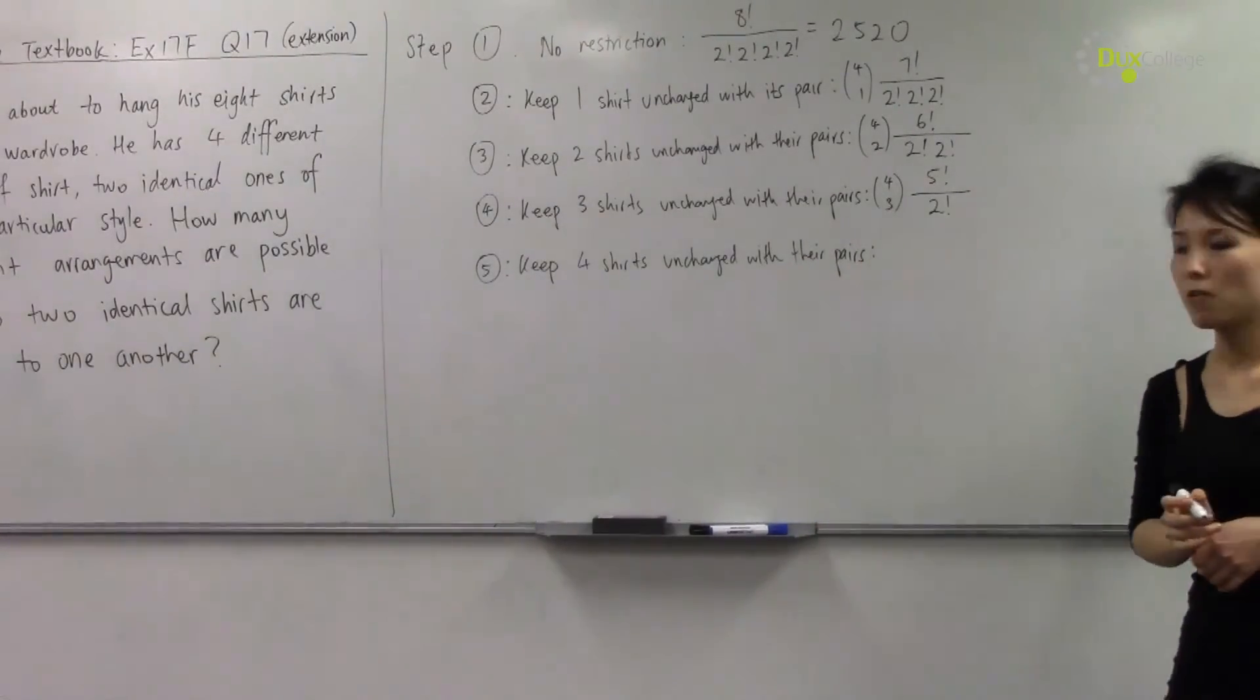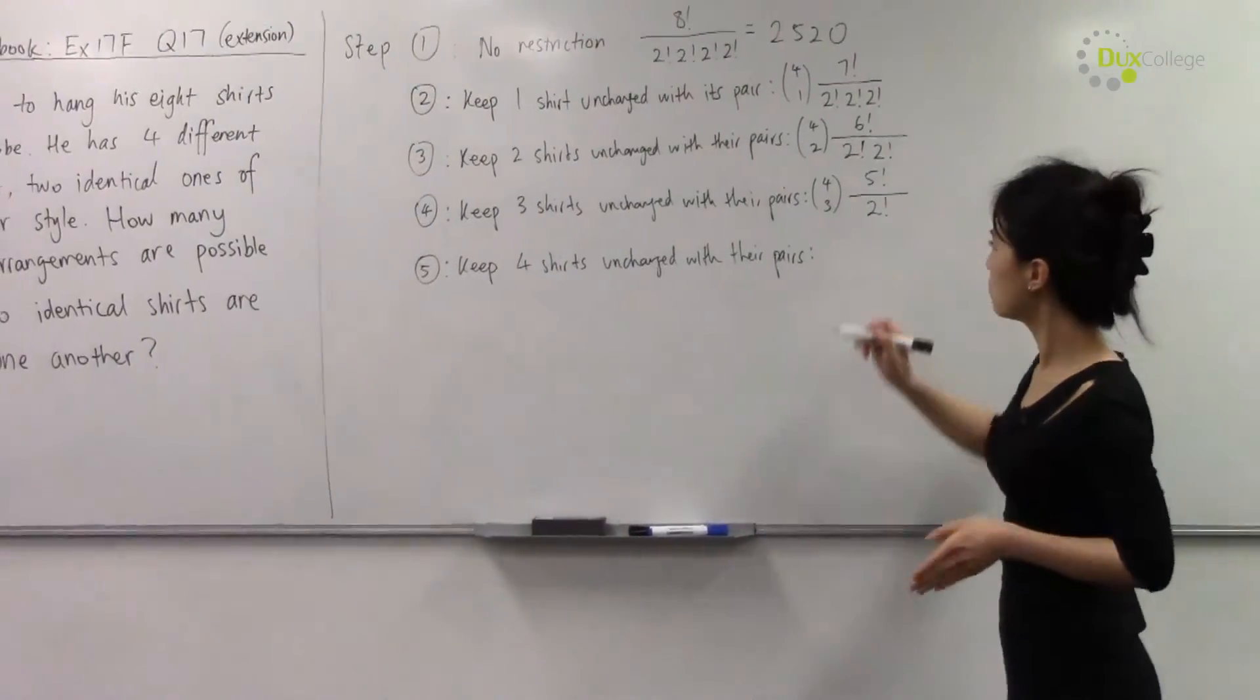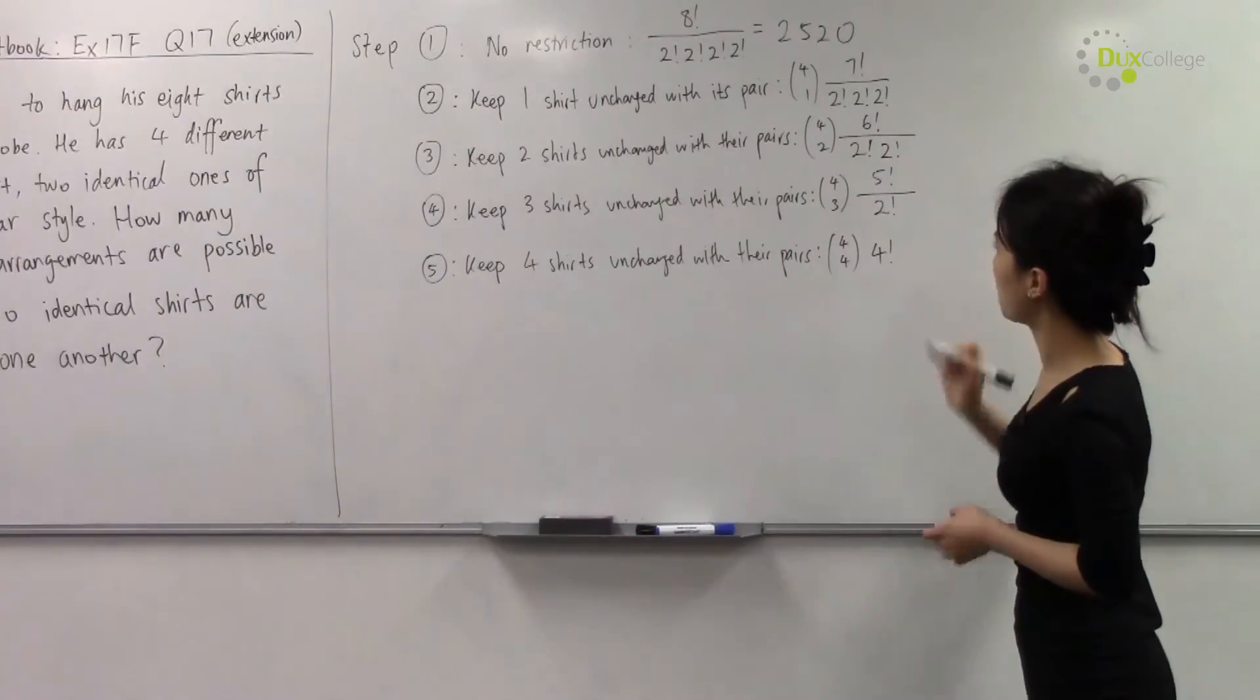And finally, in step number five, we are keeping four pairs of shirts with themselves. So that will be four choose four times four factorial ways.